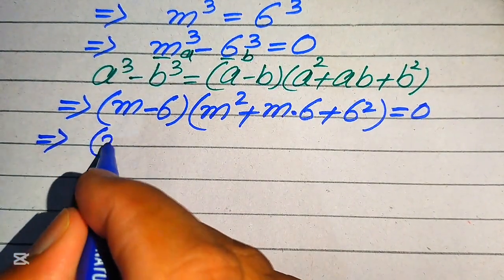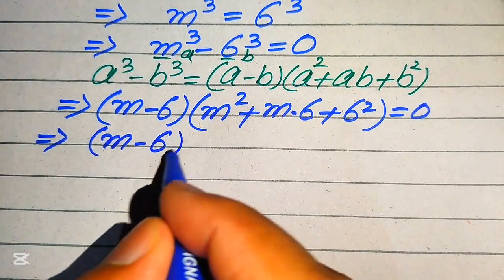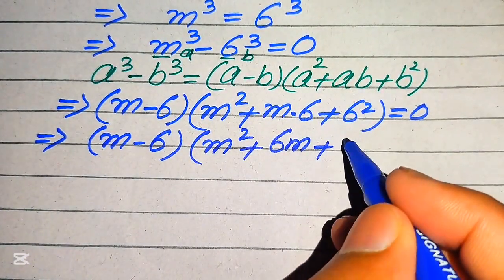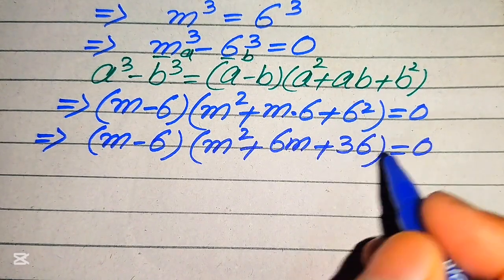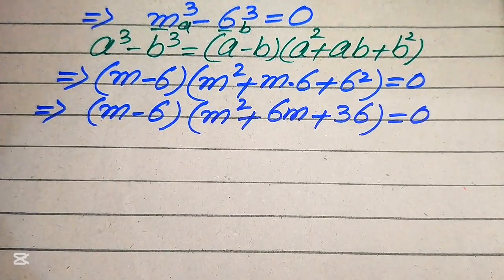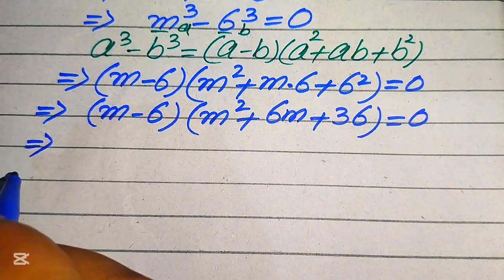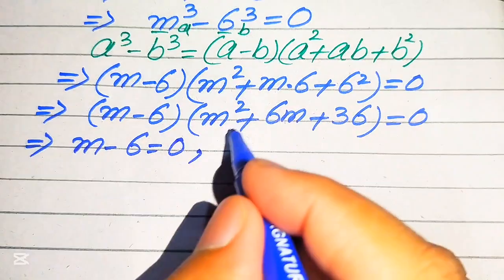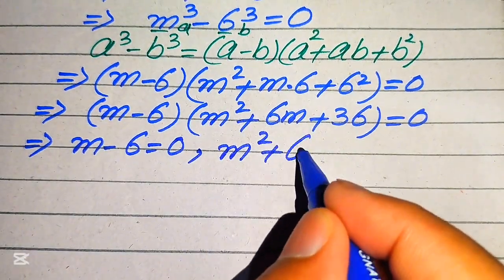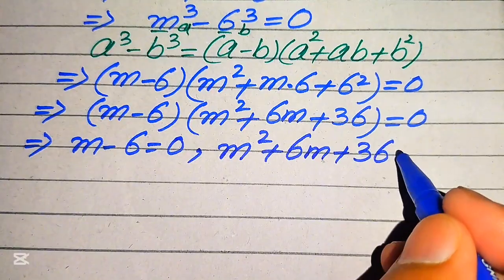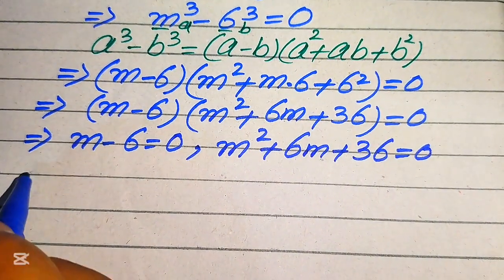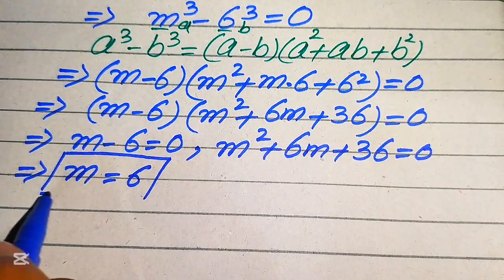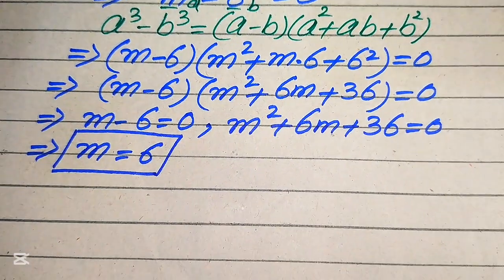After simplification this becomes (m minus 6)(m squared plus 6m plus 36) equals 0. We split into two cases: the first case is m minus 6 equals 0, and the second case is m squared plus 6m plus 36 equals 0. From the first case we easily get m equals 6, which is the first real root of the given equation.